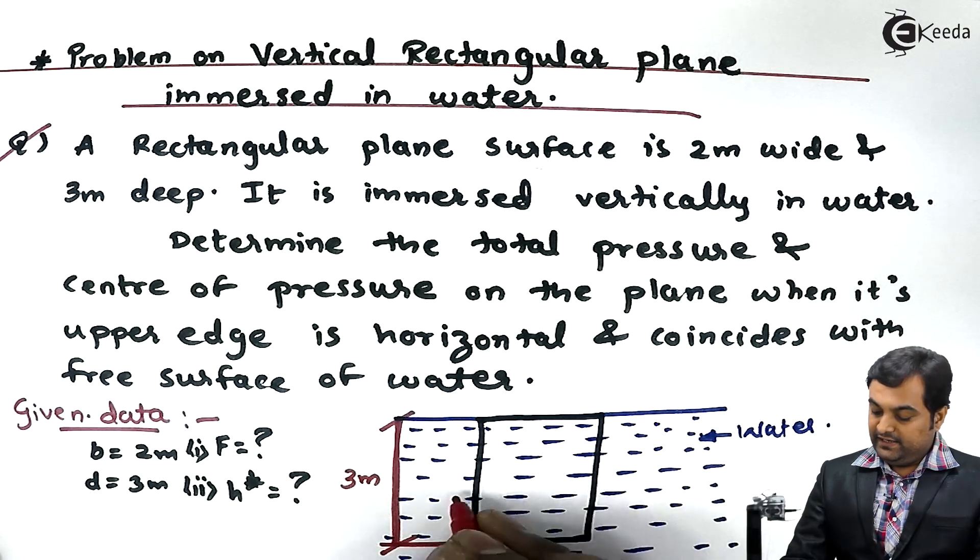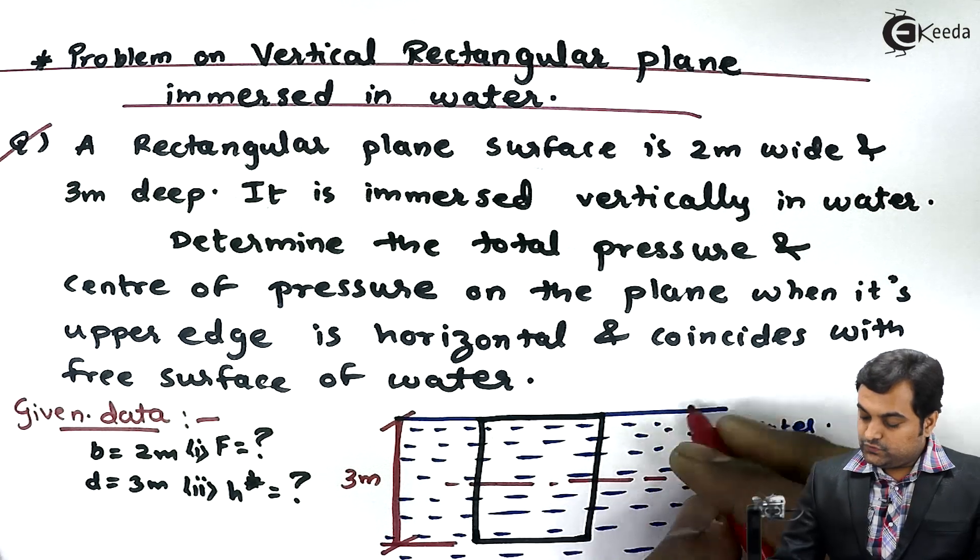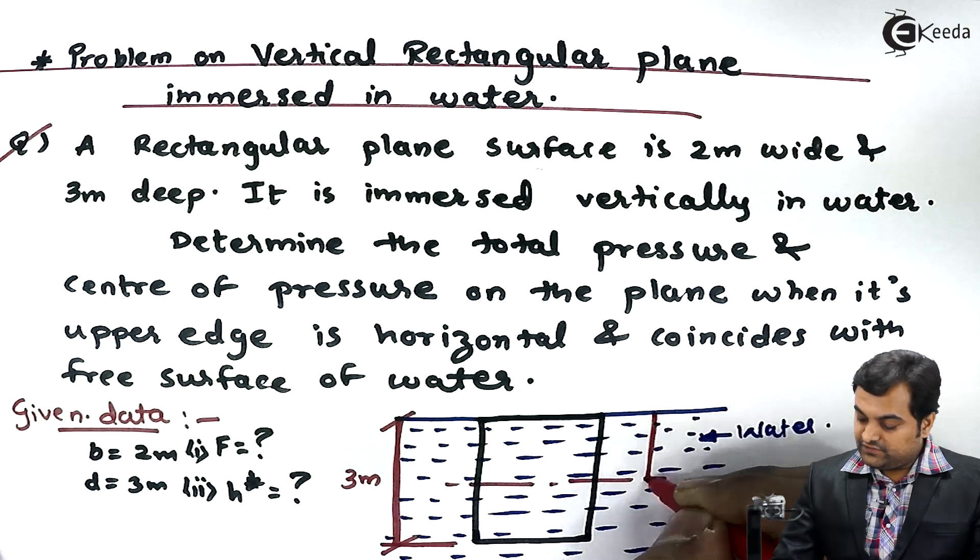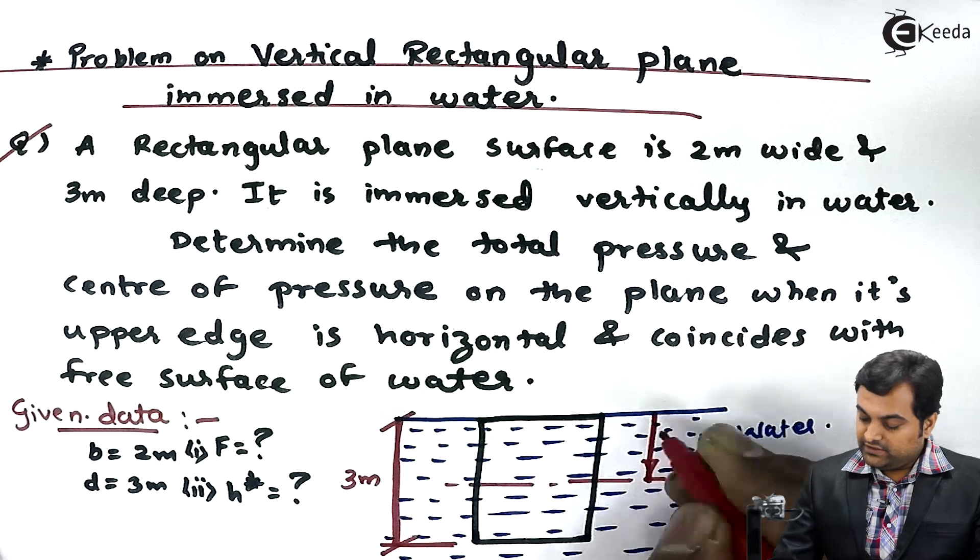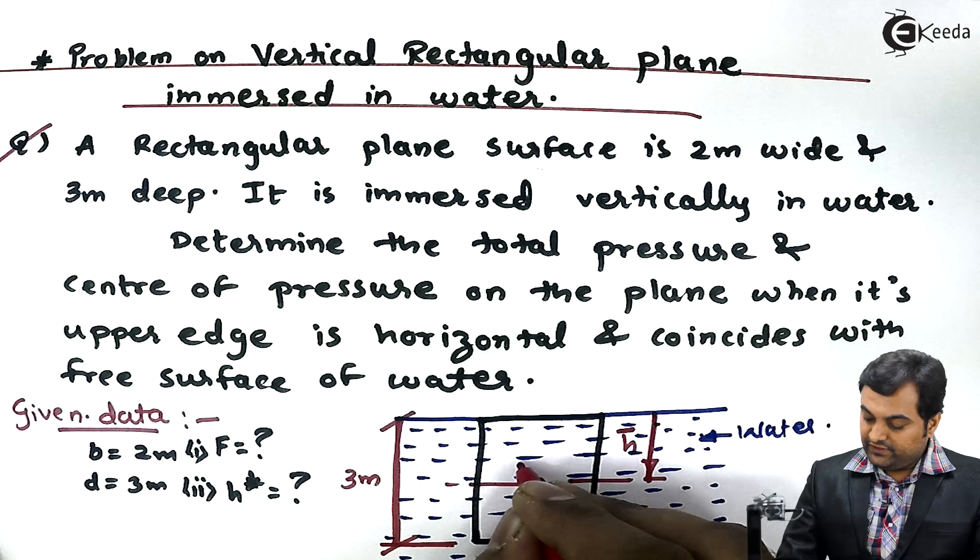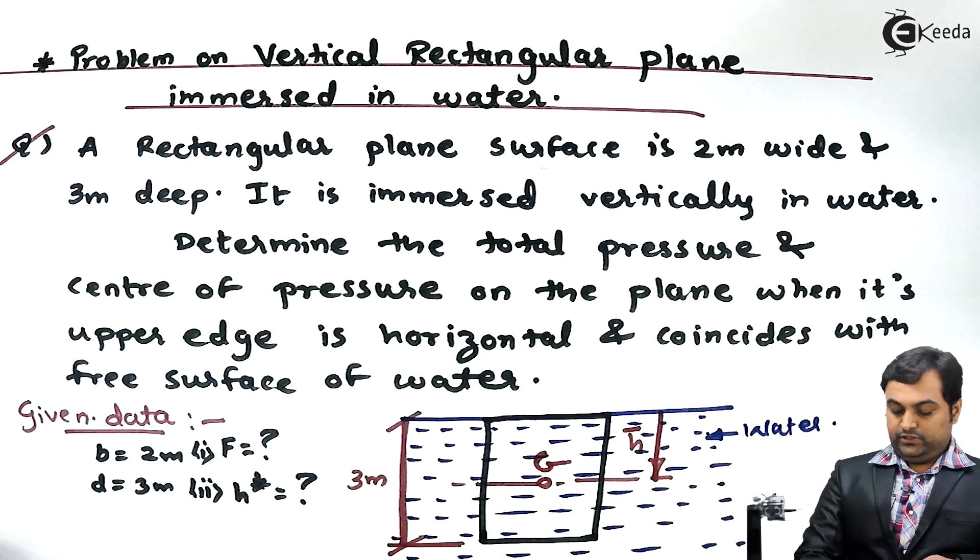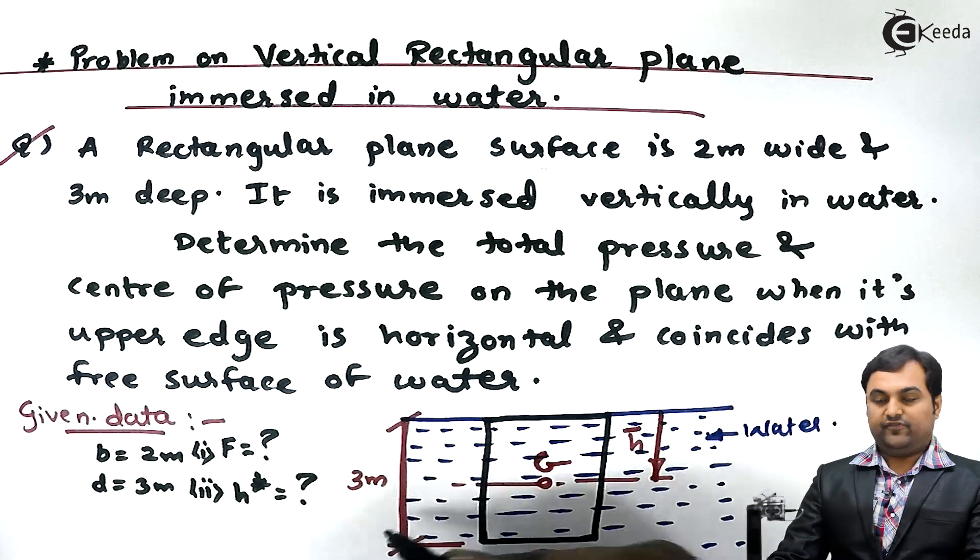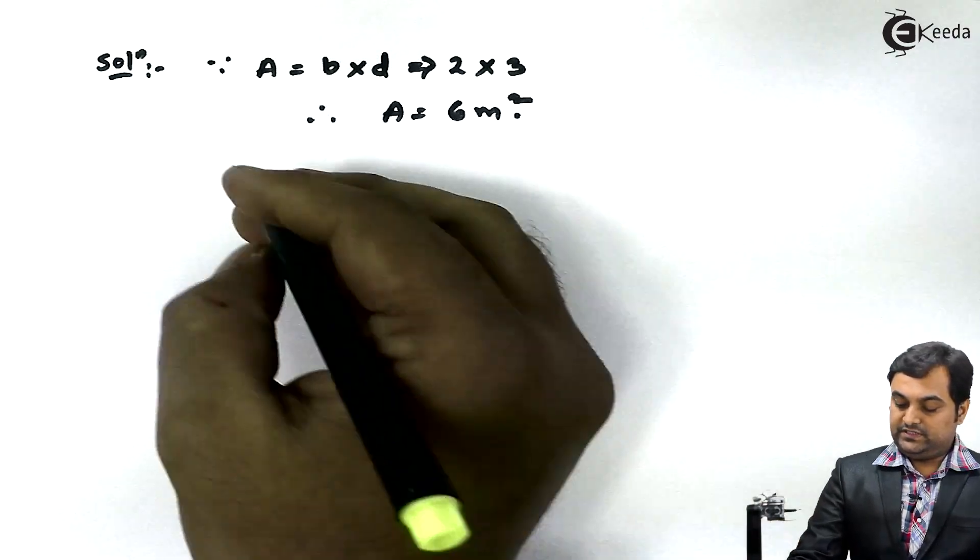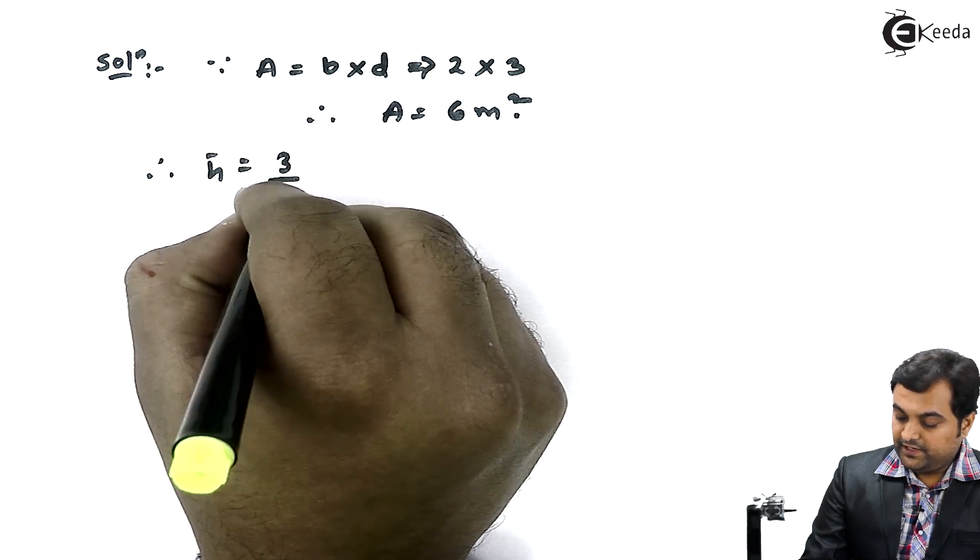So this distance from the free surface of water, this is nothing but H bar - that is the location of centroid or center of gravity. Now this H bar would be half of 3, so therefore H bar is equal to 3 by 2, so it is 1.5 meter.